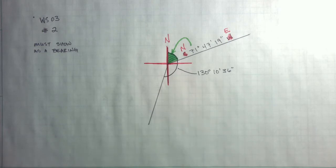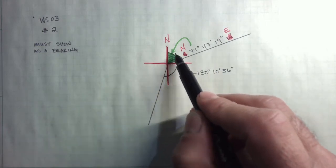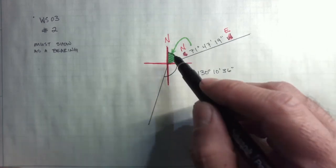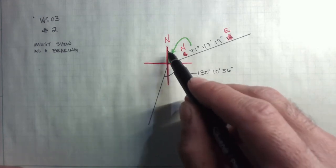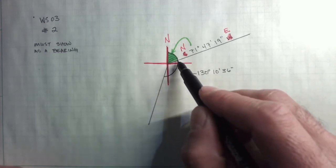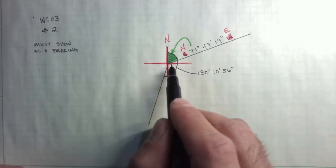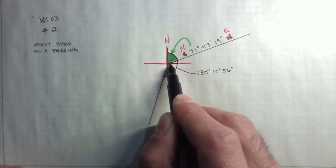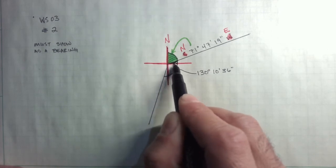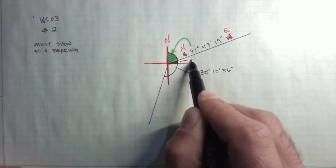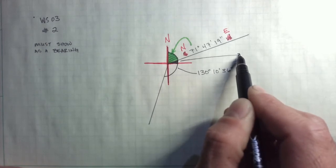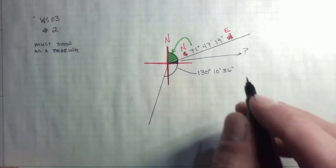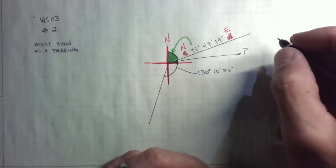So I know that there are 90 degrees between north and east. I have 71 degrees, 47 minutes, 19 seconds of that is accounted for in this green angle. Remember the bearing from north towards the east. So that means there's a little piece of the pie still in that northeast quadrant. So this little, I'll color it in black there.